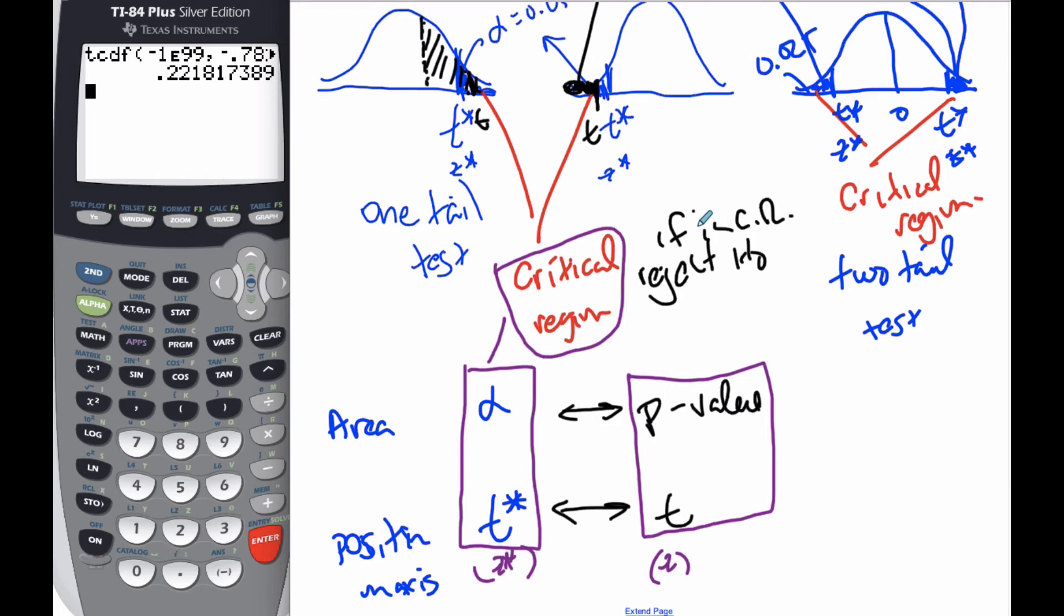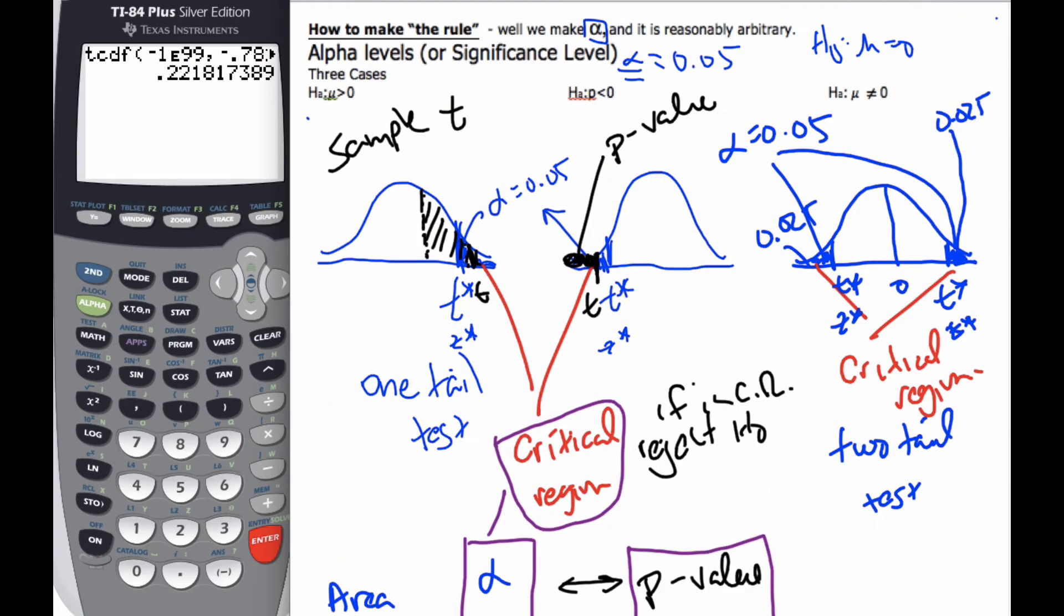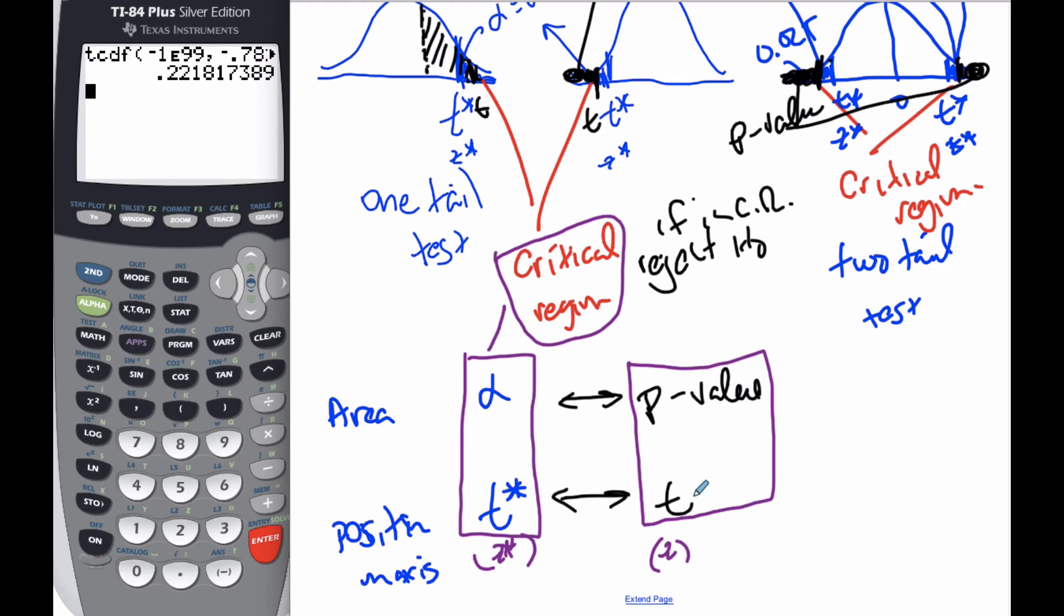The only thing to be careful about with a two-tailed test is this area here. So if I have a value of t here, I get this area. But then I also have to take the corresponding one over here. These together make the p-value. So you find your area and you multiply it by two, you double it. And so that's what the p-value, alpha, t, and t-star all mean and relate to each other. It's really important that you understand this relationship.